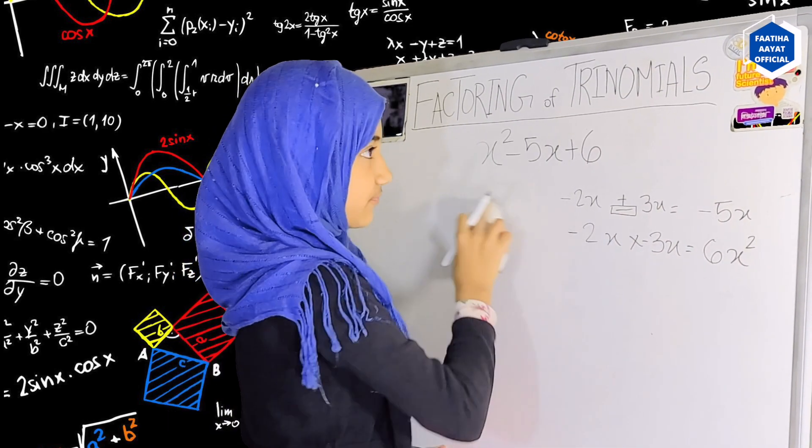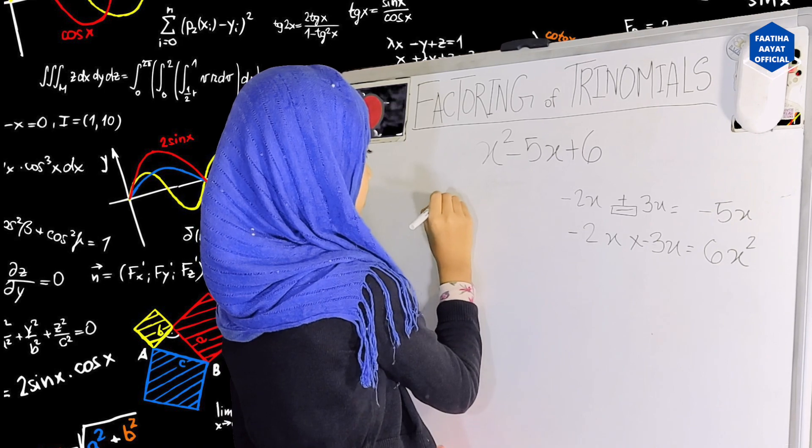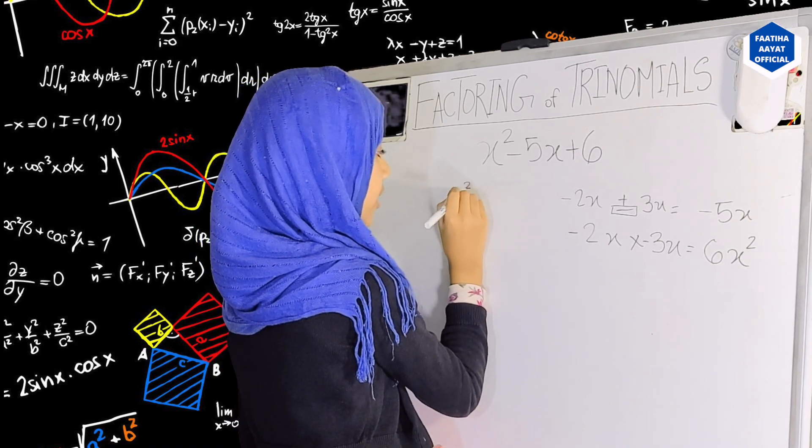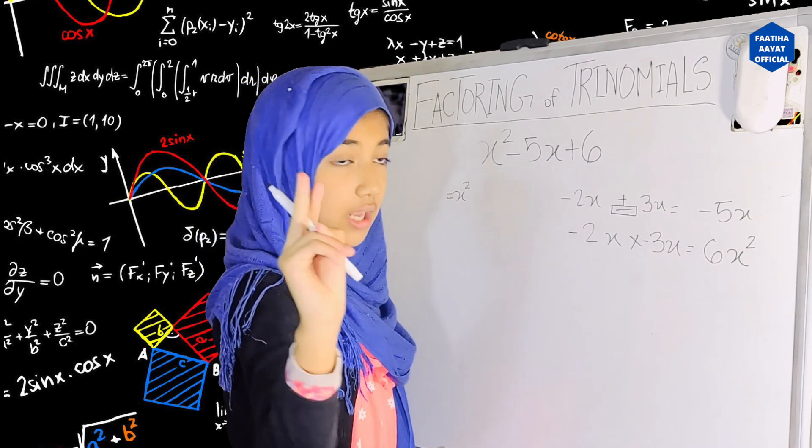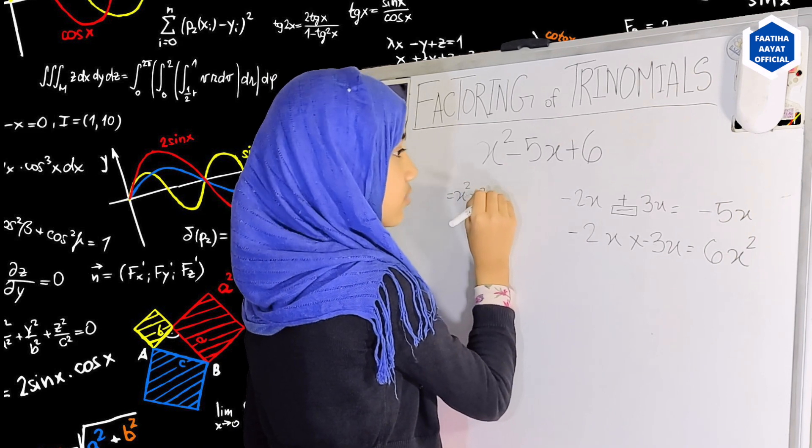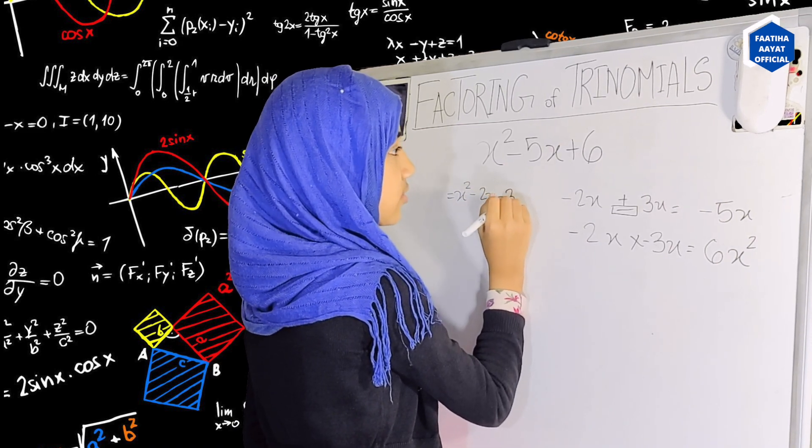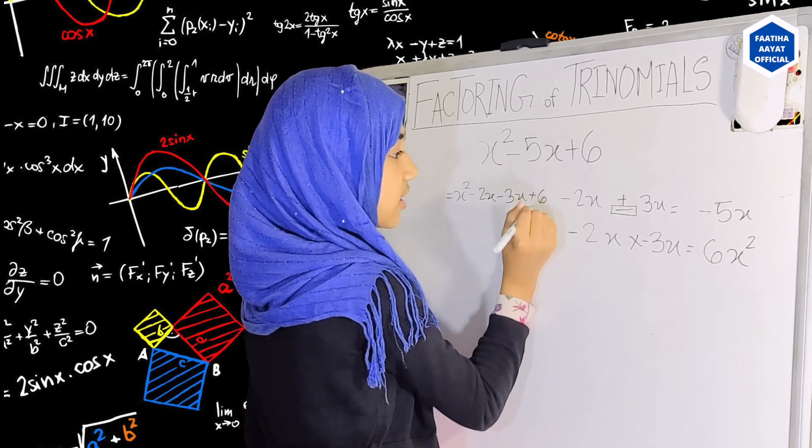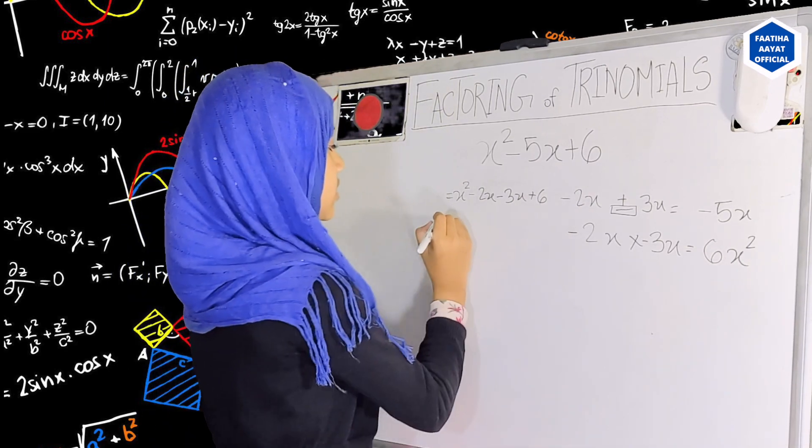And write it again: equals to x squared, and so our two numbers are minus 2x and minus 3x plus 6 on the other side.